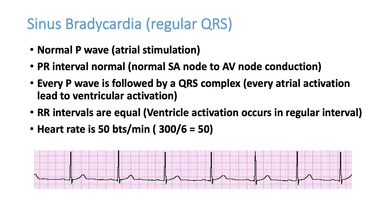Sinus bradycardia: when we examine the pulse and it is regular, we say the patient is in sinus rhythm. On ECG, to confirm sinus rhythm, there should be a P wave, a normal PR interval, a QRS complex after each P wave, and equal RR intervals. If the rate is very low, we call it sinus bradycardia. A normal P wave must be present, and the PR interval should be normal — a prolonged PR interval would indicate first degree heart block.